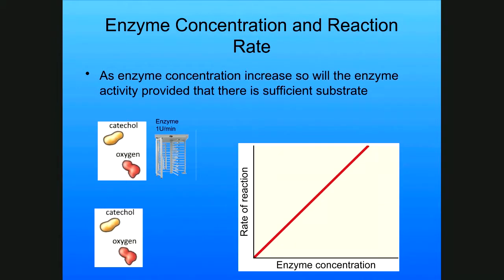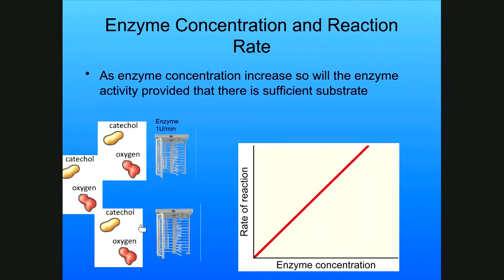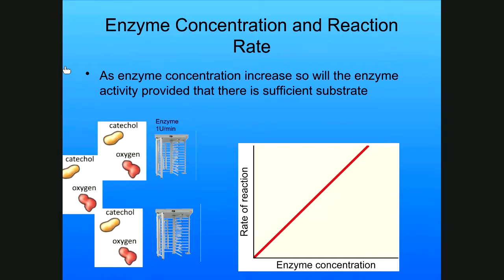Similarly, if you look at enzyme concentration and reaction rate: if you have one enzyme and lots of substrate, that enzyme sets your rate. But if you add more enzymes — more turnstiles — you increase the rate. The more enzymes you add, the higher the rate, provided there's sufficient substrate. If you run out of substrate, you're back to the previous limiting curve. That's the kind of thing we'll be exploring in the lab. Next, go to the lab handout, look through the materials, and then watch the lab demonstration.